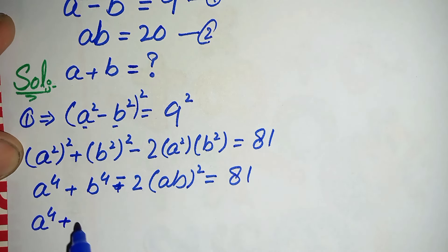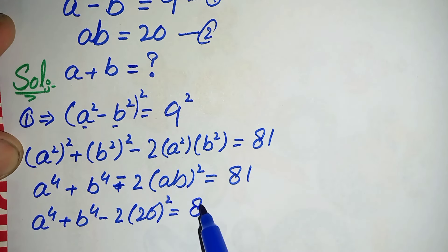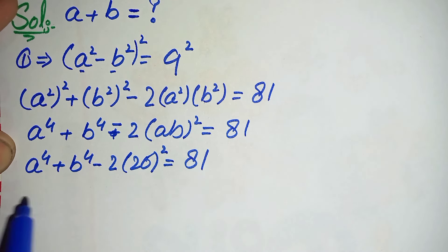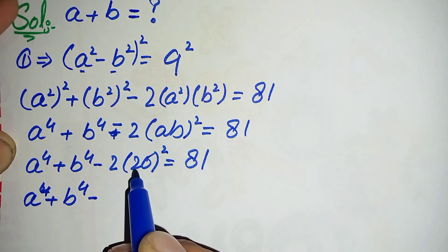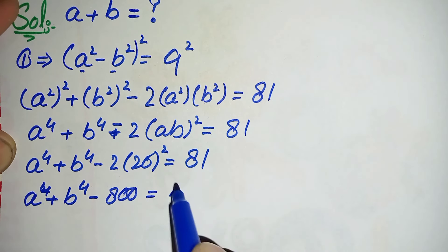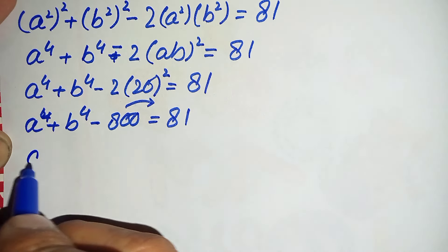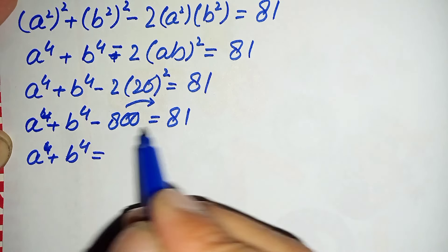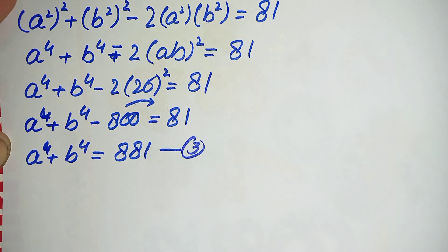Substituting ab = 20, we get a⁴ + b⁴ - 2·(20)² = 81. Now 20² = 400 and 400 × 2 = 800, so a⁴ + b⁴ - 800 = 81. Moving -800 to the right hand side gives a⁴ + b⁴ = 800 + 81 = 881. We will call this equation number three.